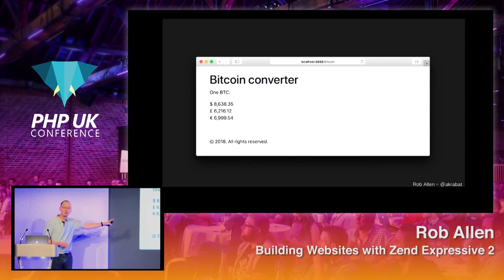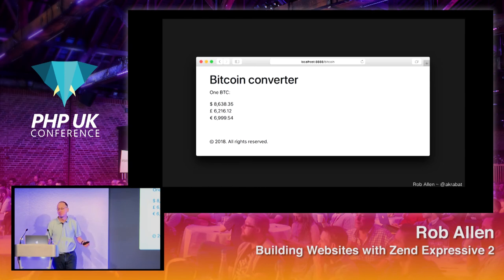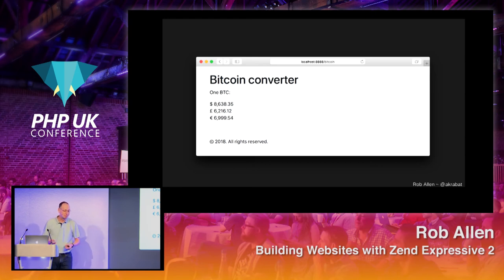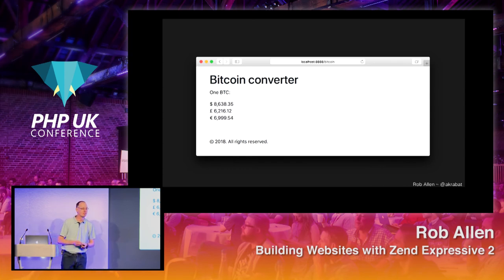These prices were correct two days ago — don't base your investment decisions on them. One Bitcoin is worth roughly $8,500 today, unless there's been a massive spike in the last day and a half. We now have a working website — you now know how to build an Expressive site. It's not particularly complicated.